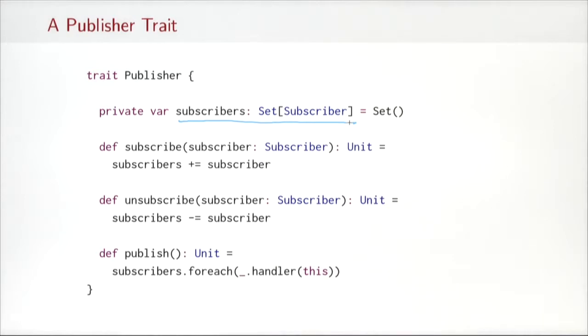And what it does is it adds the subscriber to the set with a plus equals. The dual of subscribe, of course, is unsubscribe. So a subscriber can also announce that it's no longer interested in published info of that publisher. And then the implementation of that would simply remove the subscriber from the set. And finally a publisher has a publish method. What that does is it simply goes through all subscribers and invokes for each subscriber a handler method that the subscriber must provide with the current publisher as argument.